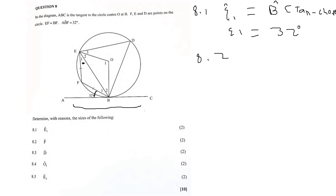We need to spot where angle F is. Angle F is in triangle EFB — it's forming as part of triangle EFB. So we have E1 here, F here, and B1, forming that triangle. I need to find F. E1 I know is 32 degrees, so we can put E1 as 32 degrees.